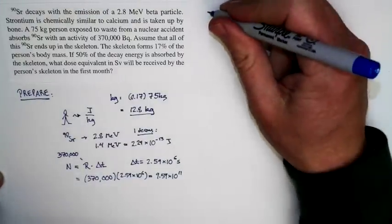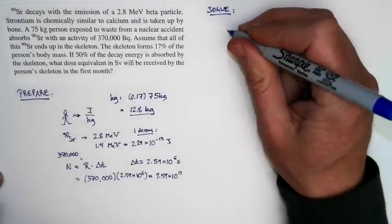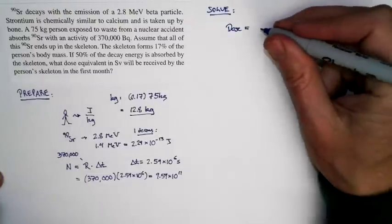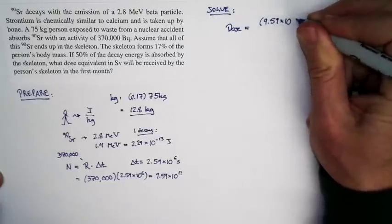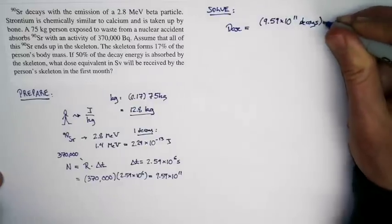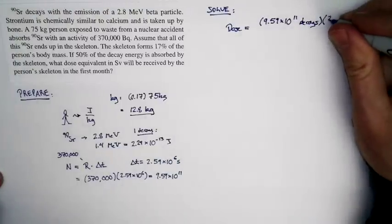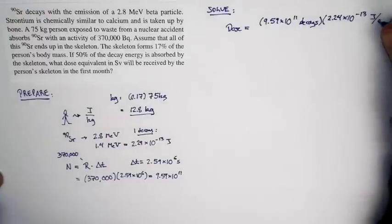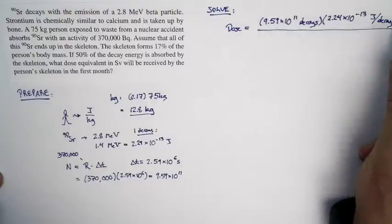And now we're ready to solve. So first off, we're going to compute the dose in grays. The dose is equal to the energy absorbed, and the energy absorbed is going to be equal to the number of decays, 9.59 times 10 to the 11th decays, times the energy per decay. And we worked out the energy that was absorbed in one decay is 2.24 times 10 to the negative 13th joules per decay. So that's the total amount of energy that's absorbed, and it's absorbed by the skeleton.